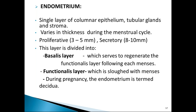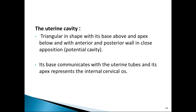The uterine endometrium is a single layer of columnar epithelium with glands and stroma. Its thickness varies: in the proliferative phase (first half of cycle) it is 3 to 5 mm, and in the secretory phase it goes up to 8 to 10 mm. Endometrium is divided into basal layer and functionalis layer. The functionalis layer sheds during the menstrual cycle and regenerates from the basal layer. During pregnancy, the endometrium is called decidua, a specialized form to support pregnancy. The uterine cavity is triangular — base upwards, apex downwards.